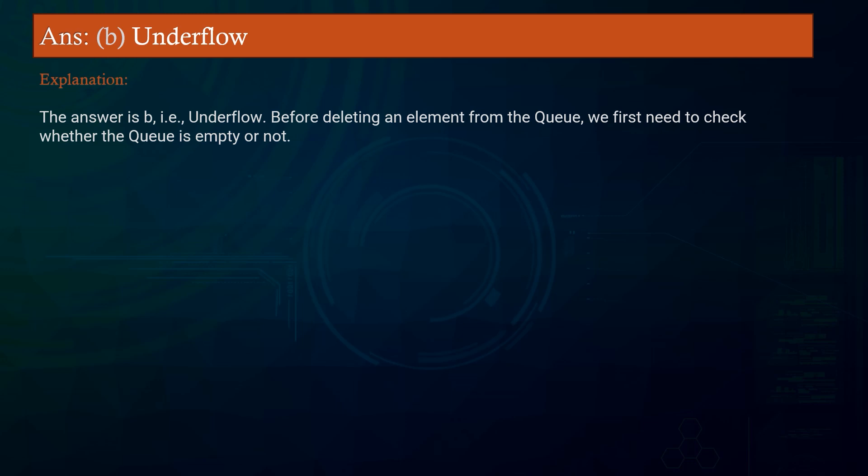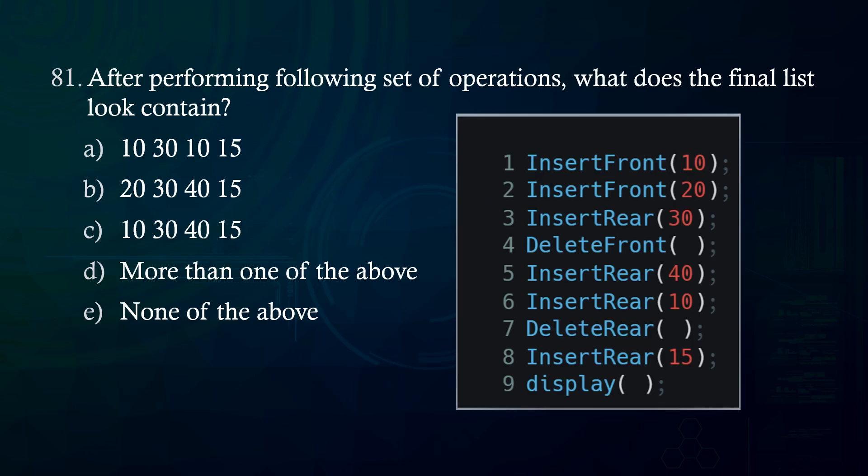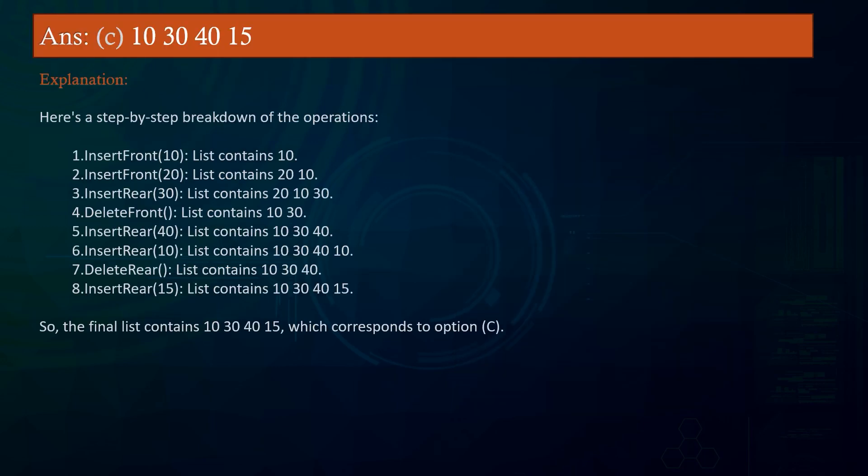After performing the following set of operations, what does the final linked list contain? A. 10-30-10-15 B. 20-30-40-15 C. 10-30-40-15 D. More than one of the above E. None of the above. Answer: 10-30-40-15.